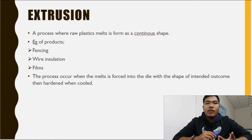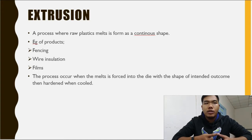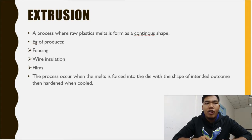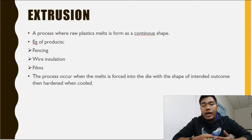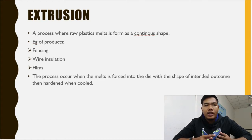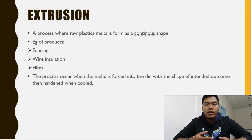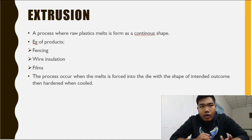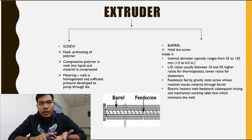The extrusion process starts with feeding plastic materials — which could be granules, pellets, or powders — into a hopper. From the hopper, the plastic is transferred to the barrel of the extruder. The material is gradually melted by the mechanical energy generated by turning screws and by heaters arranged along the barrel. The molten polymer is then forced into a die which gives the desired shape, and after passing through the die, it is hardened during cooling.